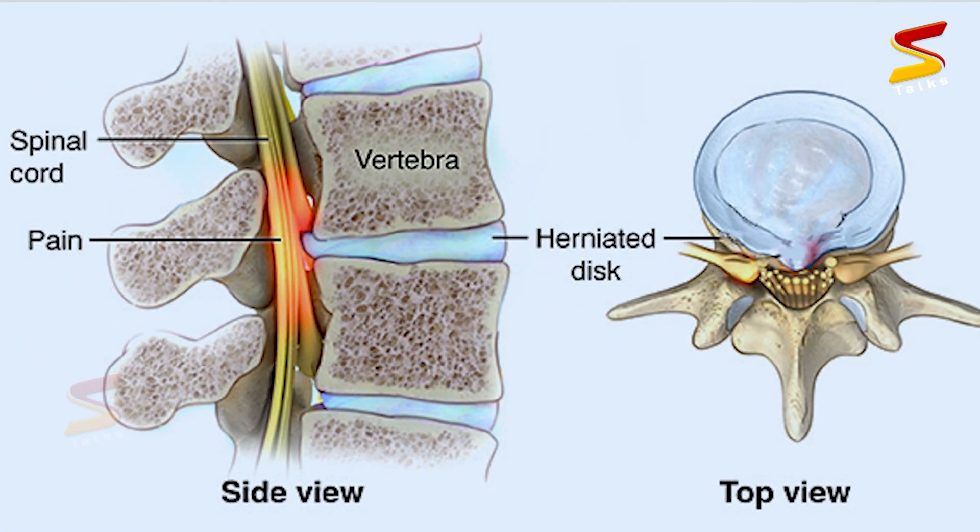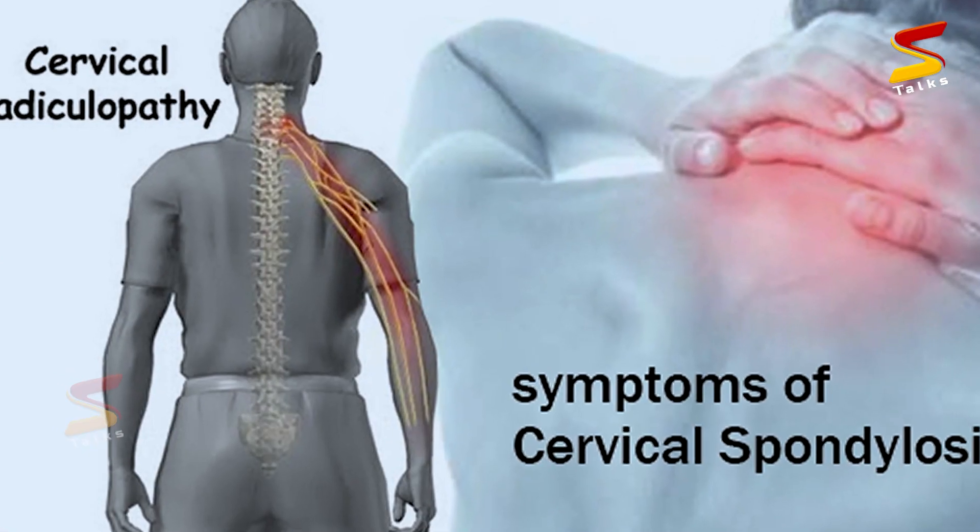If you have a disc issue, the main nerve in the middle is the spinal cord. Compression of the spinal cord is called myelopathy. If there is compression of a nerve root to the side, it is called radiculopathy. Radiculopathy is when the nerve root is irritated by the disc. If you have arm symptoms like brachialgia, it is called cervical radiculopathy.